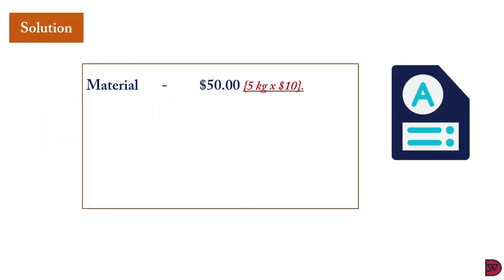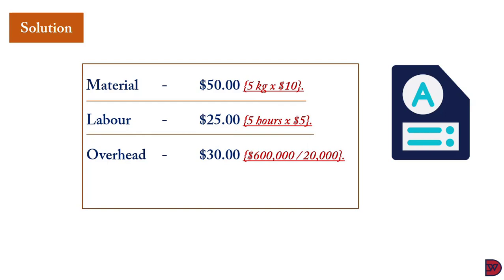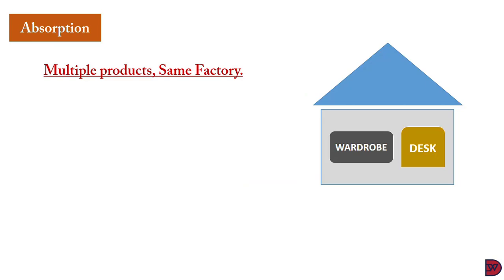In the solution: material is $50 (5 kg × $10 per kg); labor is $25 (5 hours × $5 per hour). For overheads, we get $30 per unit — that is the total overhead cost of $600,000 divided by the total produced quantity of 20,000 units. The $600,000 has been absorbed onto each wardrobe, giving a total cost per wardrobe of $75. Let's now move on to discuss multiple products being produced in a single factory.